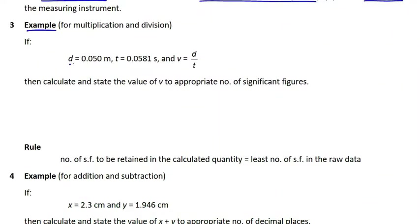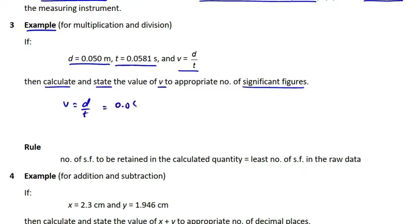Let's move on to the next rule, learned with the help of an example. If distance d = 0.050 meters is covered in time t = 0.0581 seconds, and speed v is given by the expression d/t, then calculate and state the value of v to the appropriate number of significant figures. v = d/t = 0.050 / 0.0581, which gives 0.860585 meters per second.